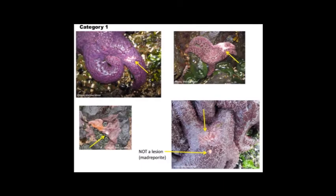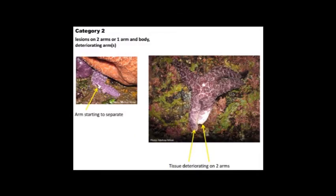According to a study at the University of California in Santa Cruz, the starfish wasting disease has been broken down into four categories of symptoms. In Category 1, a single white lesion appears on the aboral side of the sea star; however, this can be confused with the madreporite, an important part of the starfish's water vascular system. In Category 2, multiple lesions appear on the body and the arms start to slowly deteriorate. In this photo, you can clearly see the tissue deteriorating and an arm starting to separate from the body.